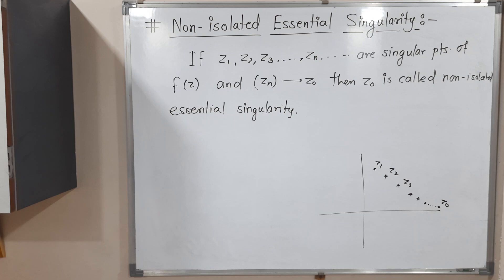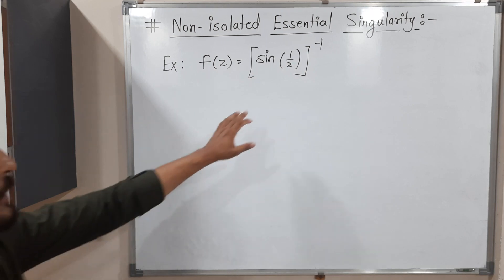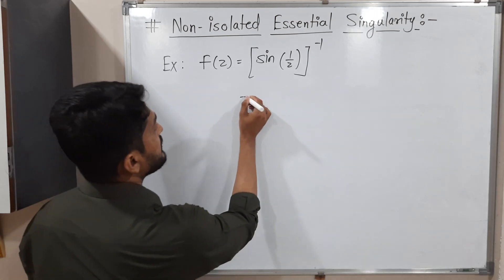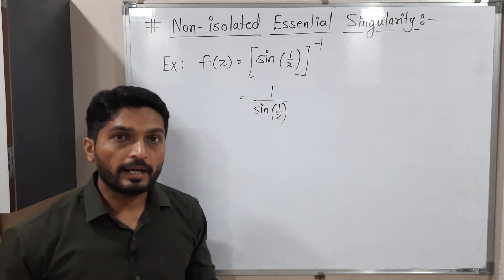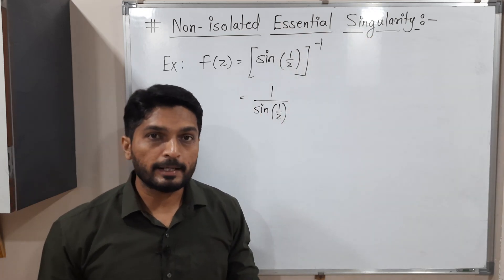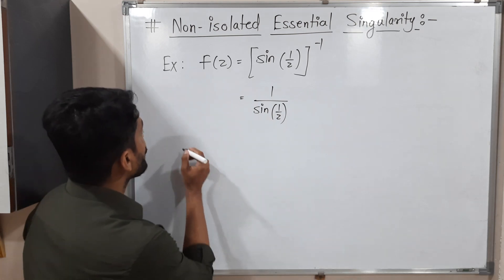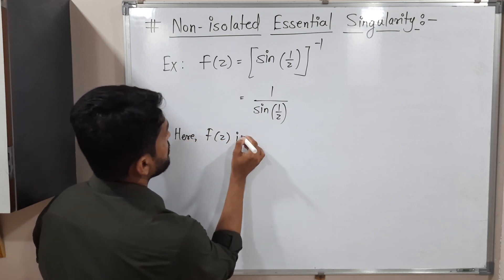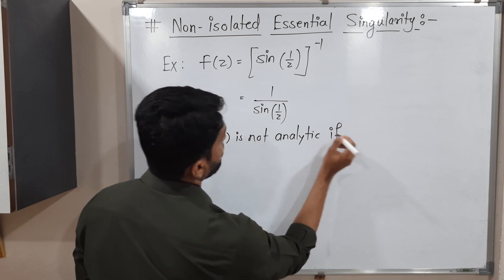We are going to discuss one example so the concept will be clear. Make a screenshot of it, then we will go further. The function we have is sine(1/z) raised to minus 1, and when we have a negative power we write it in the denominator, so it means it is 1 upon sine(1/z). Let us find its singularity first. Singular points means a point where the function is not analytic — generally, it is a point where the denominator will be zero. So f(z) is not analytic if the denominator, sine(1/z), is zero.